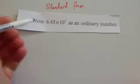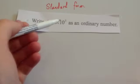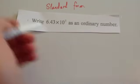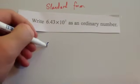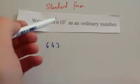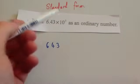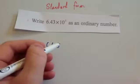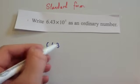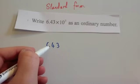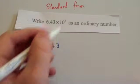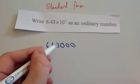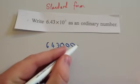Finally, we've been asked to write 6.43 times 10 to the 5 as an ordinary number. So we write 6.43. Because it's a positive power, we're going to make quite a large number, so we move the decimal point five times to the right. The decimal point starts between 6 and 4, so we move it 1, 2 places to get past the digits, then add three more zeros: 1, 2, 3, 4, 5 total places. So 6.43 times 10 to the 5 is 643,000.